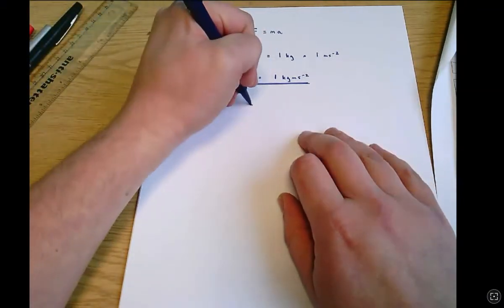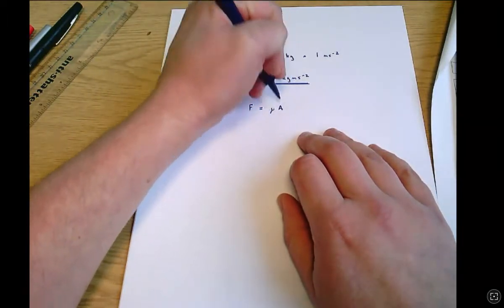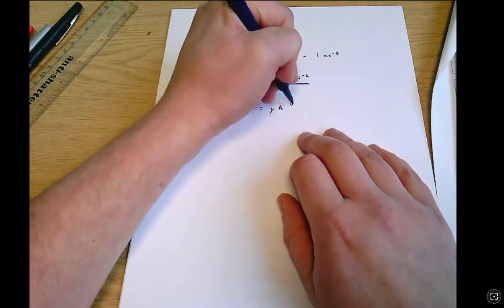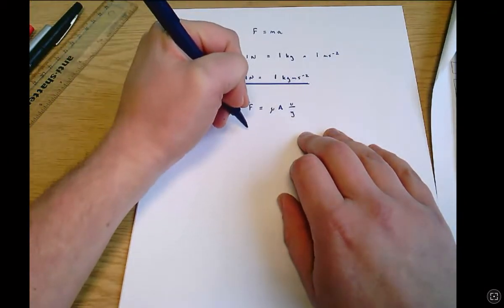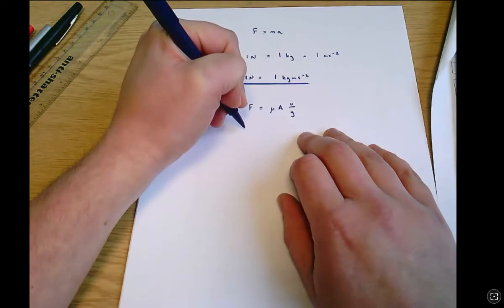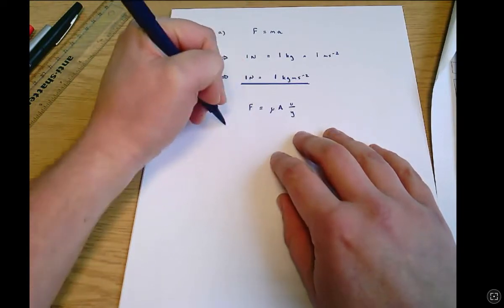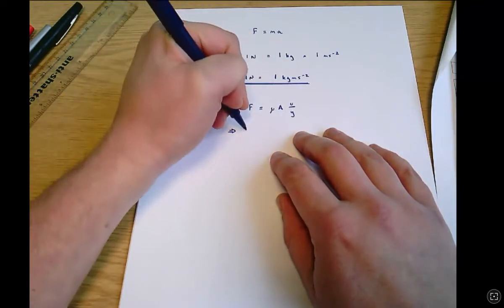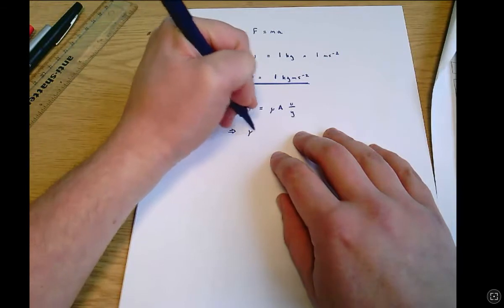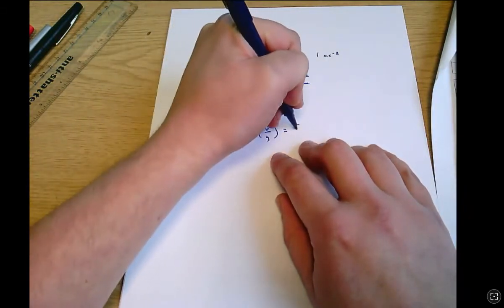So the equation we were given again just writing it straight off the exam paper is f equals mu a u over y. If I divide both sides by a I'll get, I'll do this in stages just to make it clear what I'm doing, mu times u over y equals f over a.